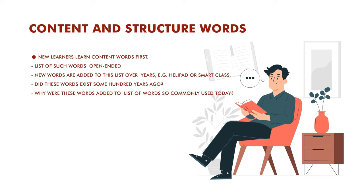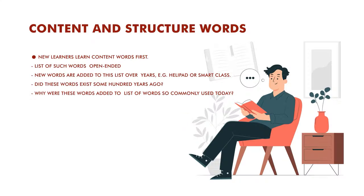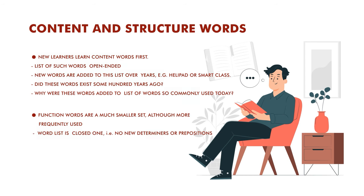A helipad, for instance, or 'smart class' — these are very recent. Did these words exist a hundred years ago? No. They are added to the list of commonly used words because society has changed — there's more technology. So content words, which are open-ended, keep increasing. Function words are a smaller, closed set, although they are much more frequently used. You won't find too many new determiners or prepositions being added — maybe some, but very few.